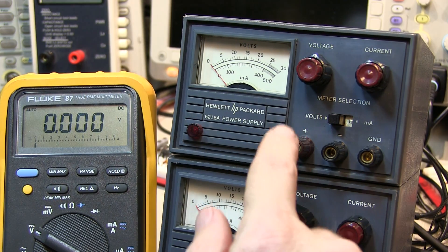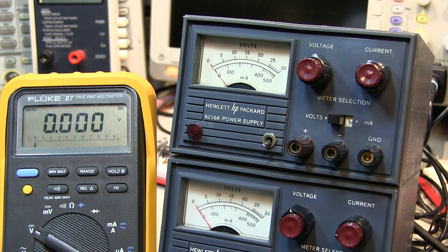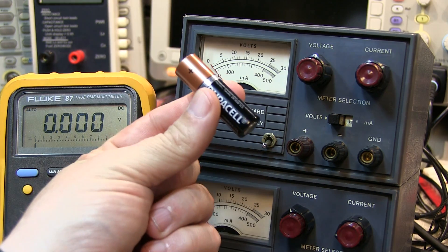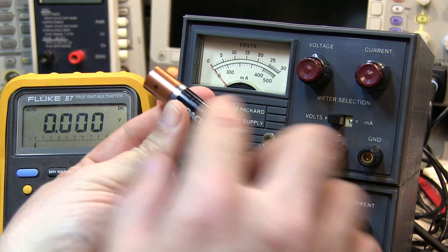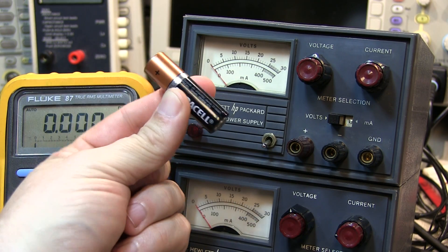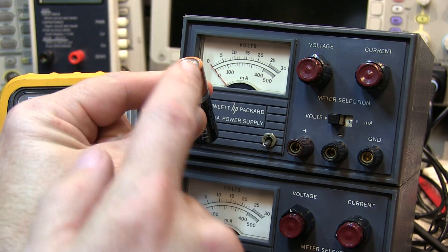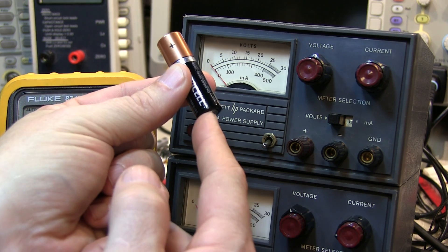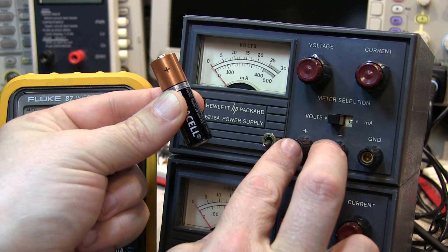The first thing we'll talk about is why are there three terminals. The best thing is to draw an analogy to a battery. We can think of a power supply as just an adjustable battery or adjustable DC voltage source. And just as a battery has a positive terminal and a negative terminal, so does the power supply.